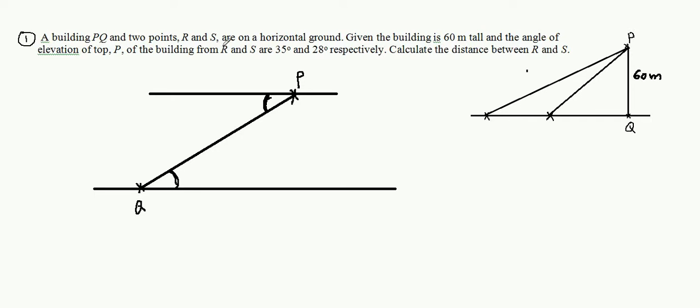Of the building from point R, from point R is 35 degrees. So this is greater angle. So here, 35 degrees. And this is R. And from point S, angle of elevation from point S, this will be 28. The angle becomes smaller. We are going to calculate the distance between point R and S, which is here. So how do we get the distance here?